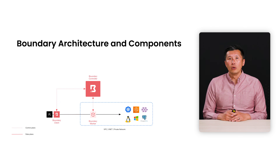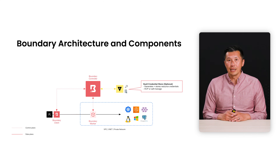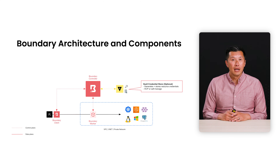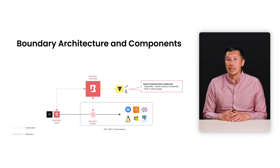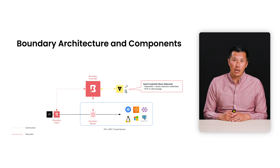Next, we'll highlight a couple of Boundary integration points that really enhance Boundary's capabilities. The first is with HashiCorp's Vault. Boundary includes a built-in capability to store credentials for target resources like SSH keys. But Vault has advanced features to generate just-in-time dynamic credentials that are short-lived. Many organizations have already standardized on Vault as a centralized secrets management platform, so it really makes sense to offload credential management onto Vault rather than using the built-in Boundary capabilities.